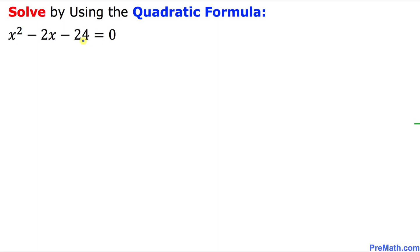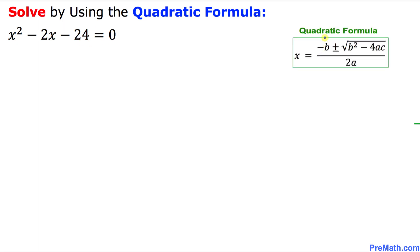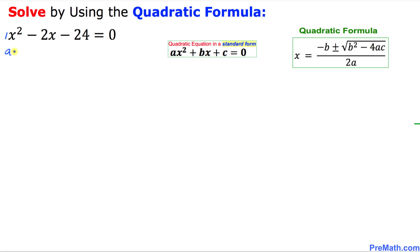Here is the quadratic equation, and we are going to use the quadratic formula shown on the right hand side. To find the A, B, and C values, we compare our given equation with the standard form. By comparing the two equations, we can see that A equals 1, B equals negative 2, and C equals negative 24.